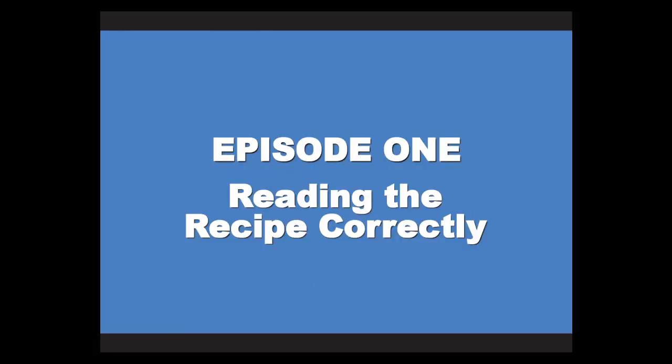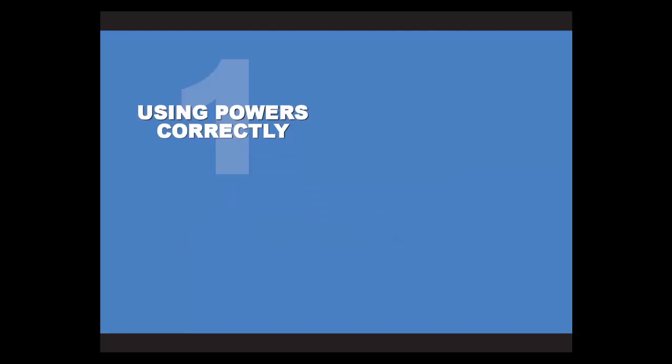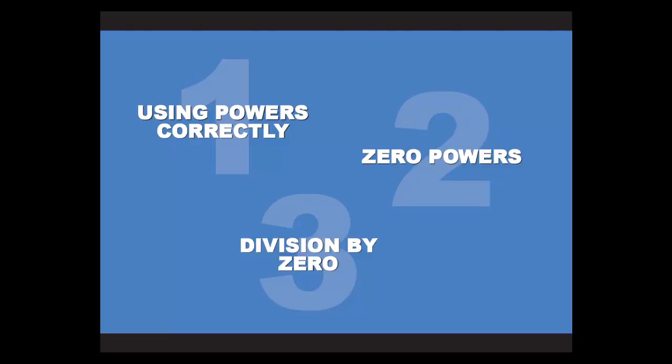This first video covers what can loosely be called reading the recipe correctly. That is, can you understand the mathematics that's being asked of you when it's presented in the form of a question? And there are three typical things that can cause trouble under this heading: making sure that you use powers indexes correctly, how you deal with zero powers, and also what happens if you attempt to divide by zero.